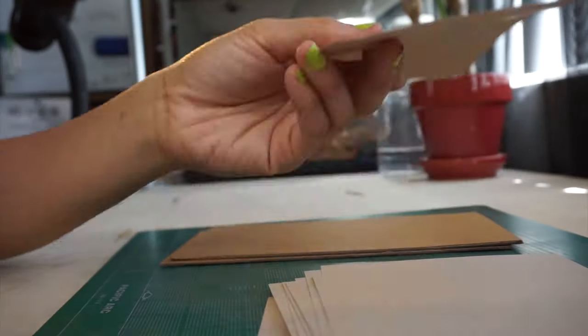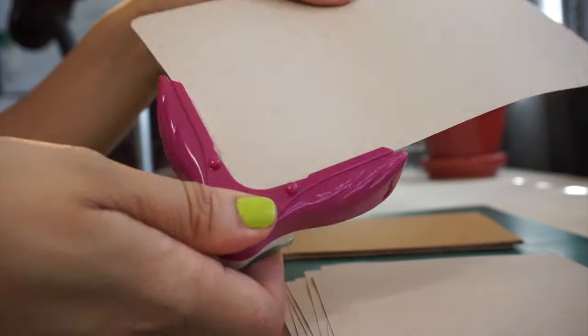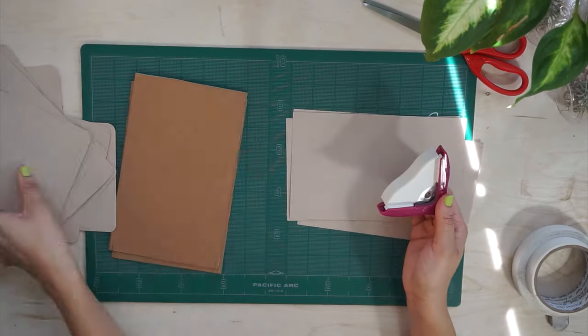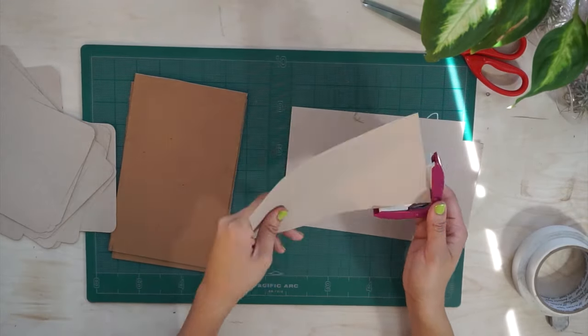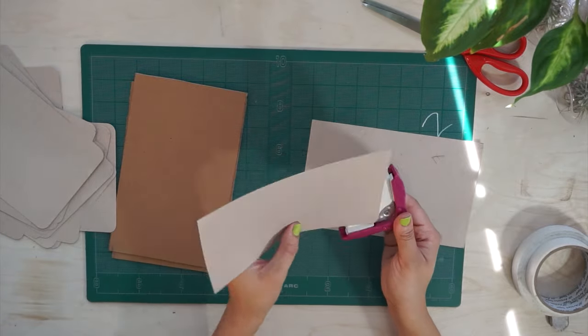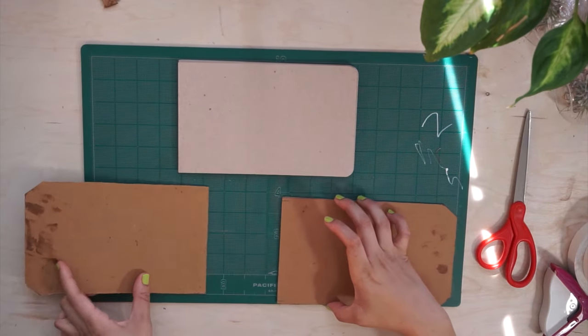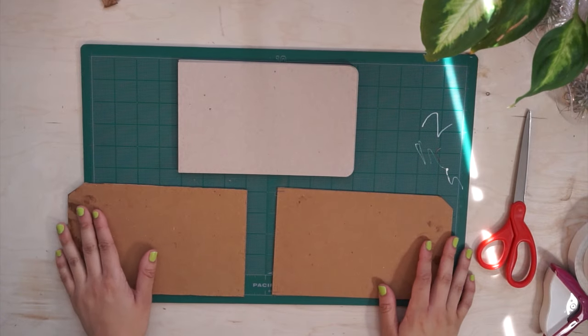Once everything is cut, I just quickly use this corner rounder I have to round out the corners on one side of each page. These are the sides that face outward from where they'll be bound, and I think it makes the overall sketchbook look a lot nicer once you're done. Again though, this part is optional.